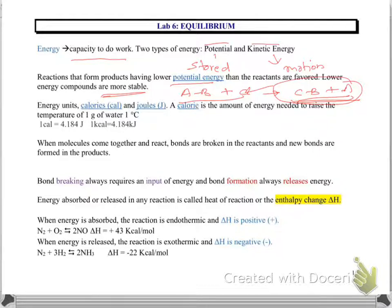There are various units for energy. The most common ones are calorie and joules. A calorie is the amount of energy needed to raise the temperature of one gram of water by one degree Celsius. The conversion factor is: one calorie equals 4.184 joules, or putting kilo on both sides, one kilocalorie equals 4.184 kilojoules.